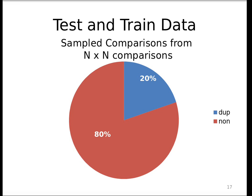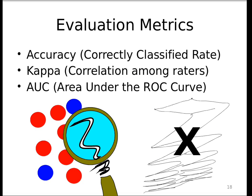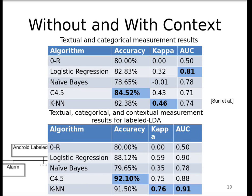Because this is pairwise comparison, 40,000 bugs means 40,000 by 40,000 comparisons — a very large number — so we cut this down by sampling data sets of 20% duplicates and 80% non-duplicates. We evaluate machine learners on these data sets using accuracy, the correctly classified rate, kappa correlation among raters, and AUC — the area under the curve — using ten-fold cross-validation.